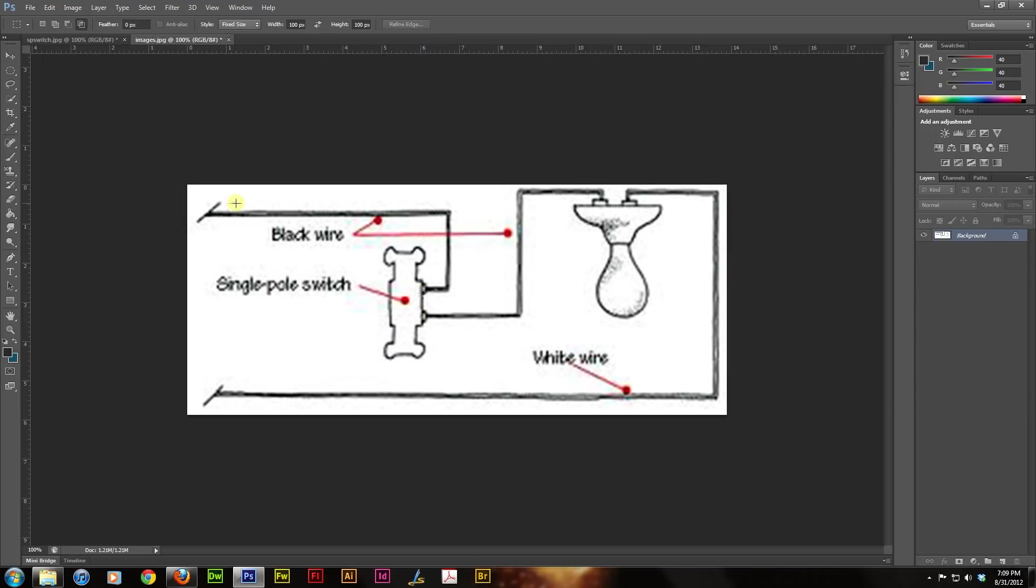When the switch is opened, the voltage that comes through this black wire is unable to make it to the light because the circuit is opened. However, when you close this switch, the electricity or the voltage in this particular wire is able to travel through this conductor, through the switch, and onto the light, and the light comes on. That's pretty much how the switch works. It works by opening and closing one of the circuit conductors, normally the ungrounded conductor.